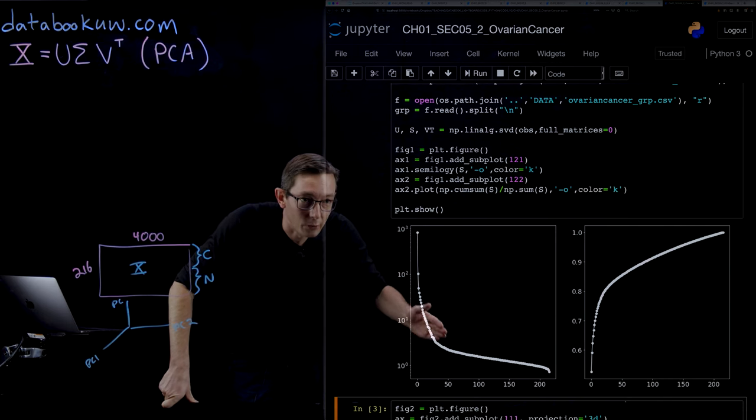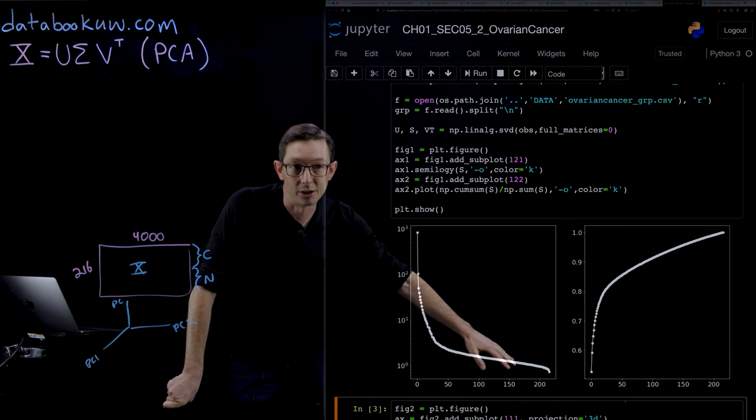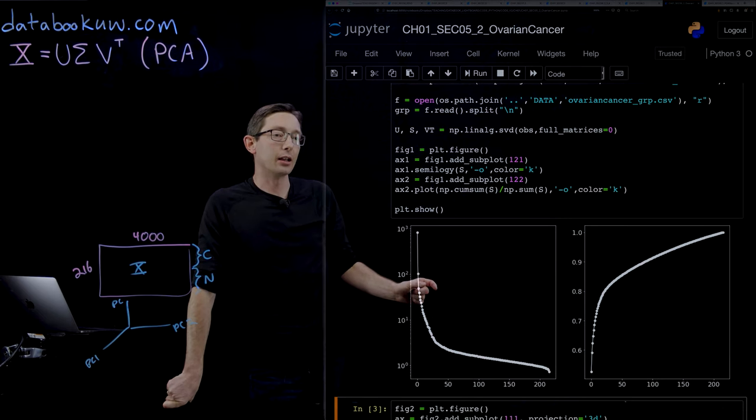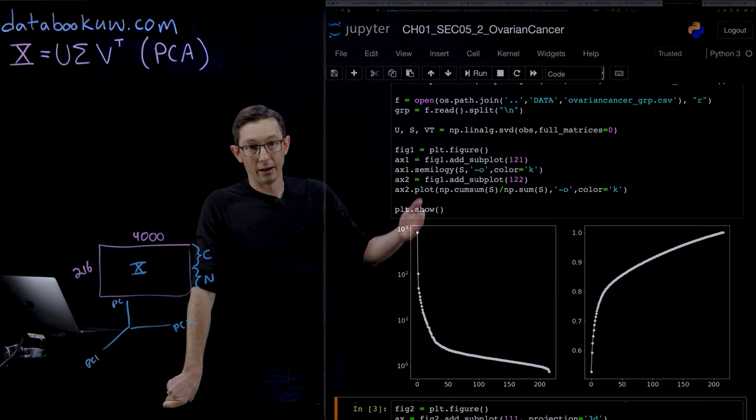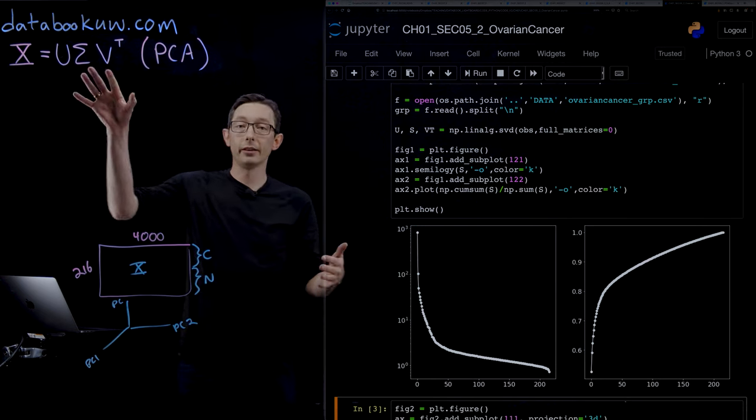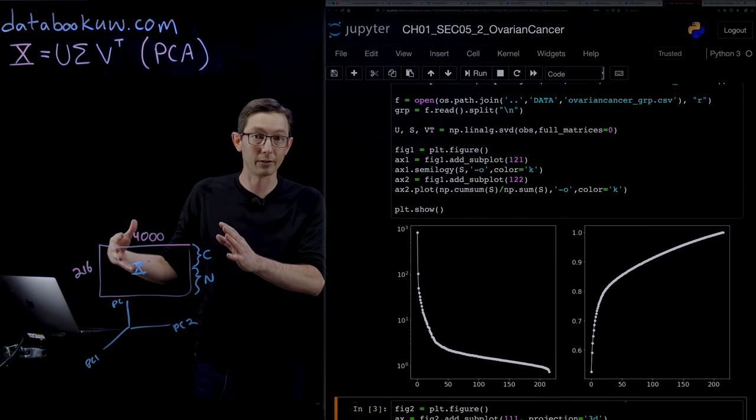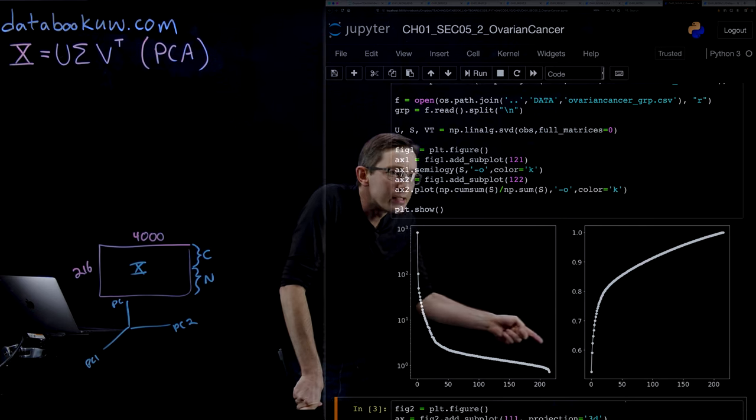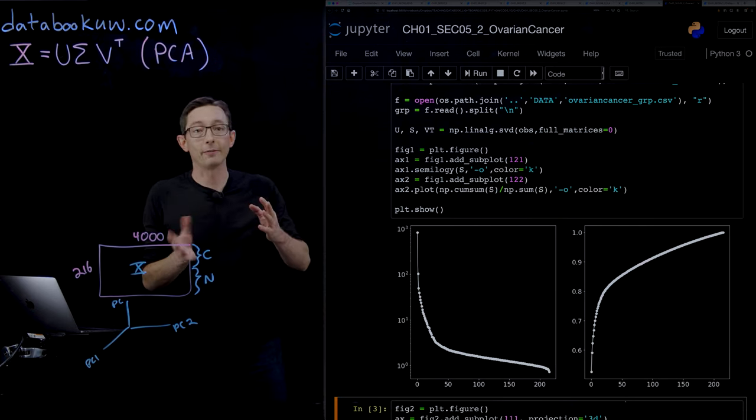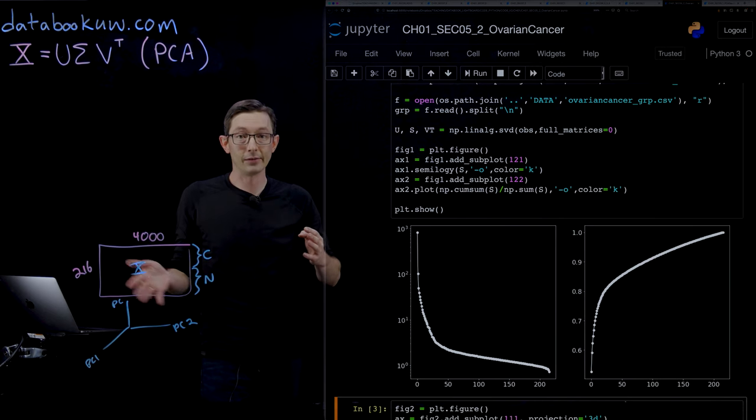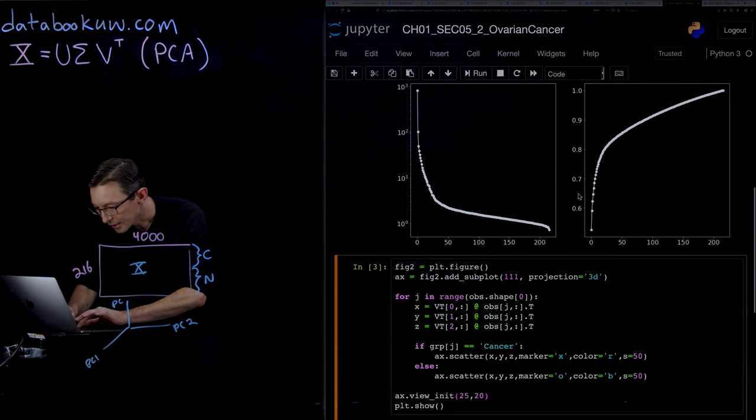There's very little information down here, so keeping only the first three or five or ten of these singular values and singular vectors, you're going to capture a large portion of the variance between all of these patients' genetic information. If you only captured the first singular vector, you'd have about 55% of the variance of the data matrix. That's really promising.